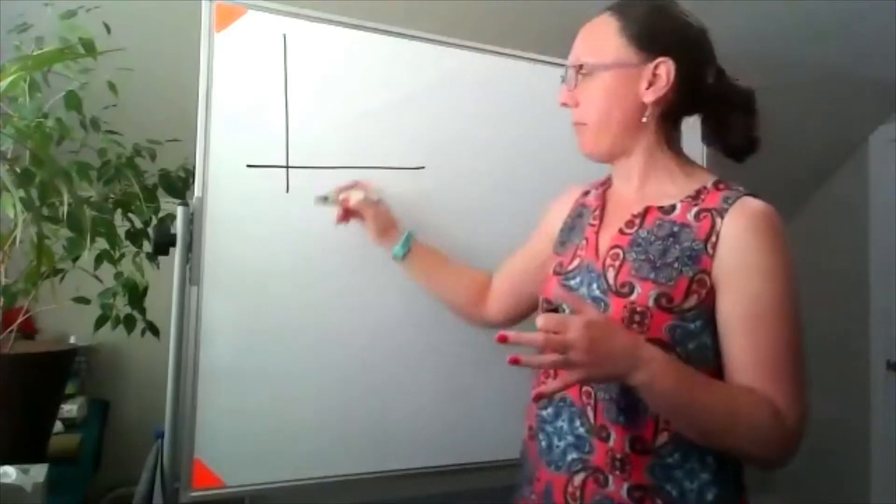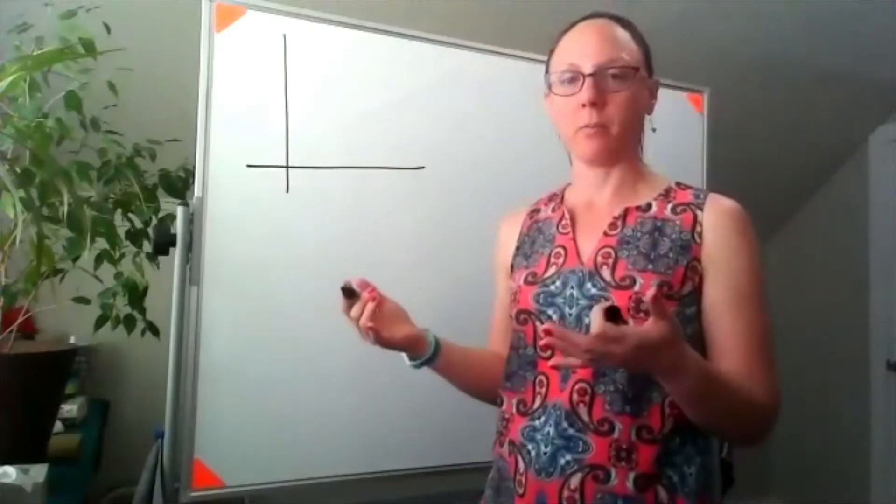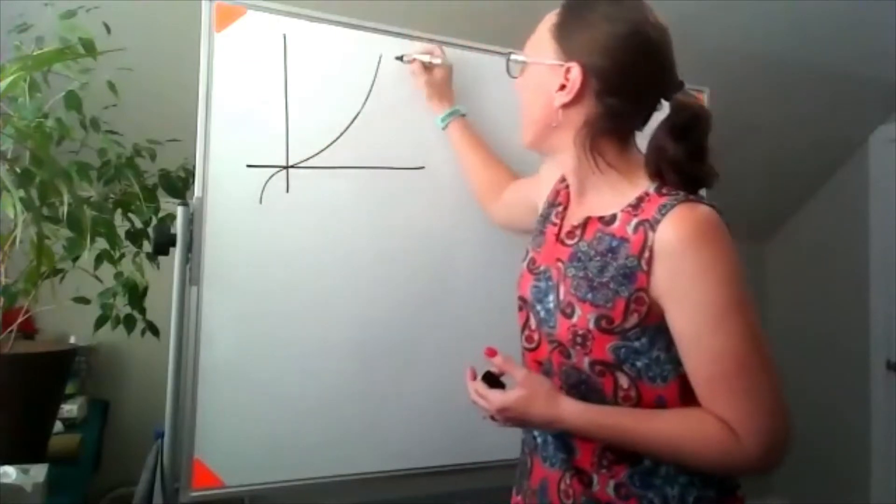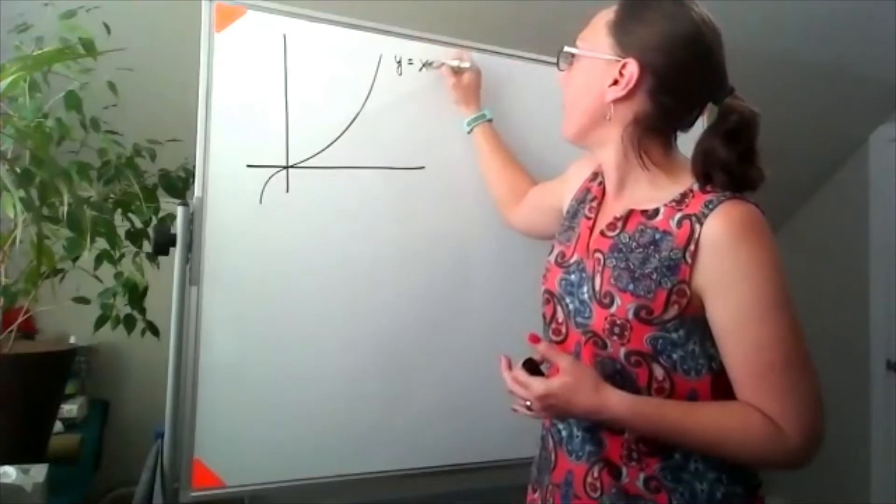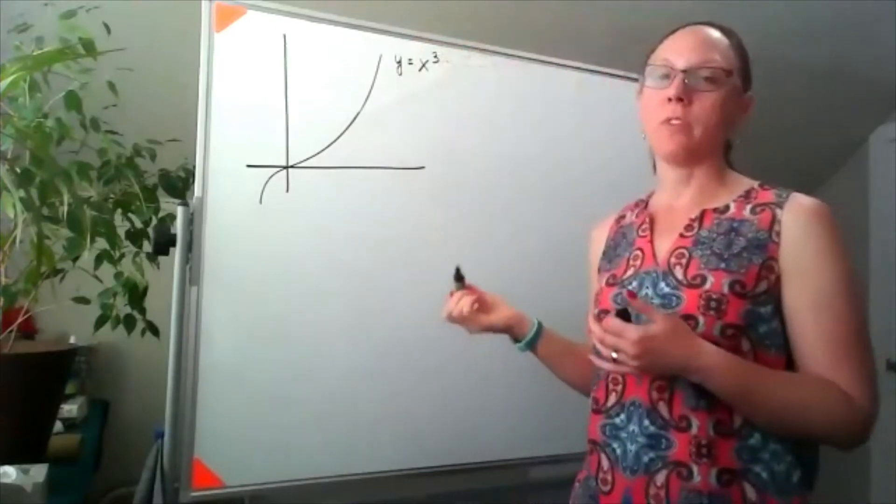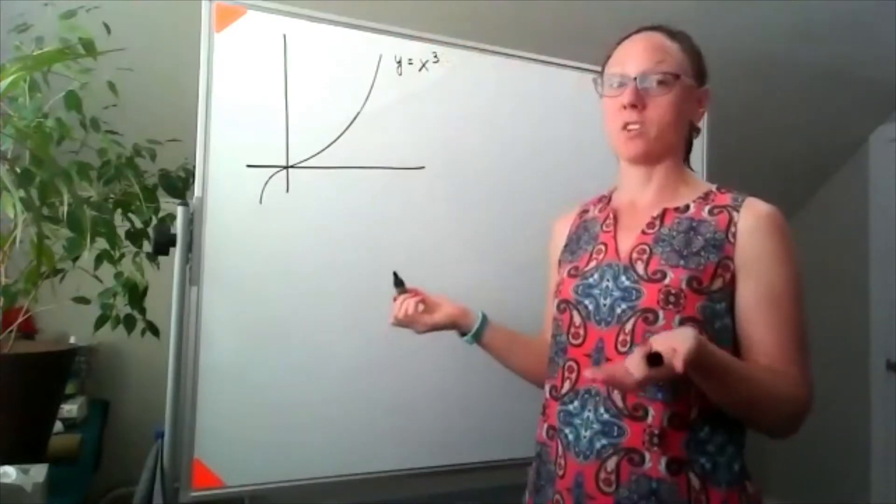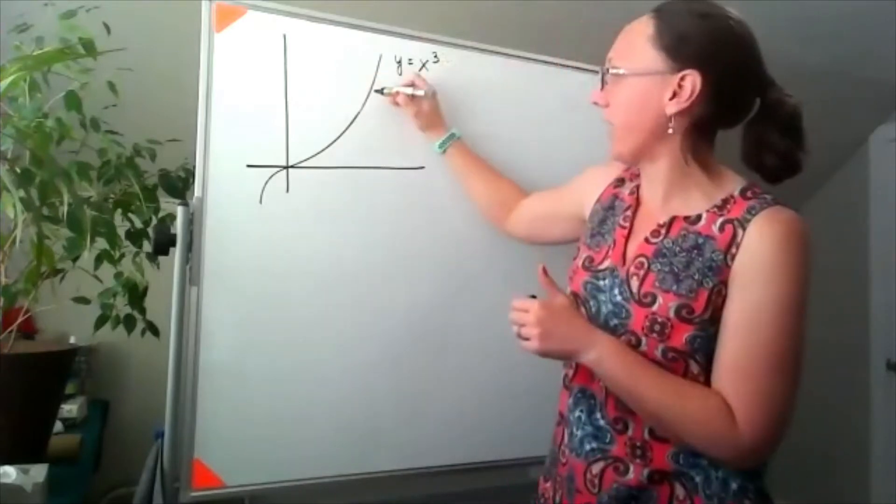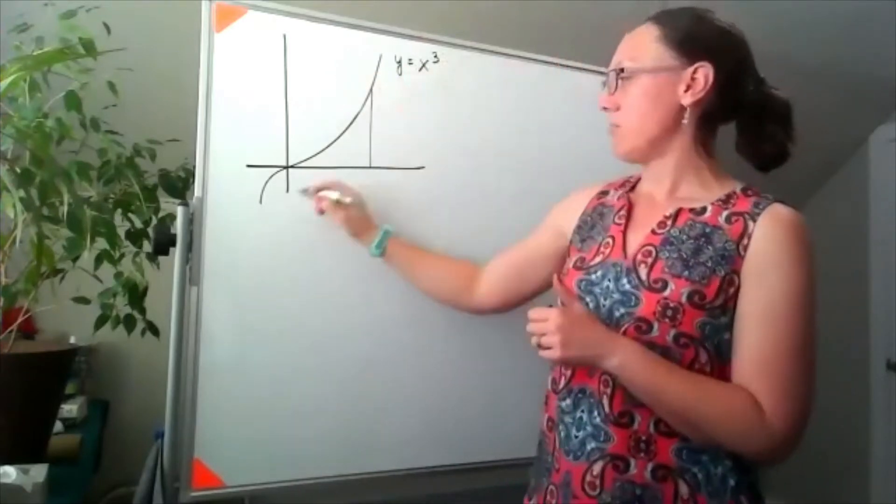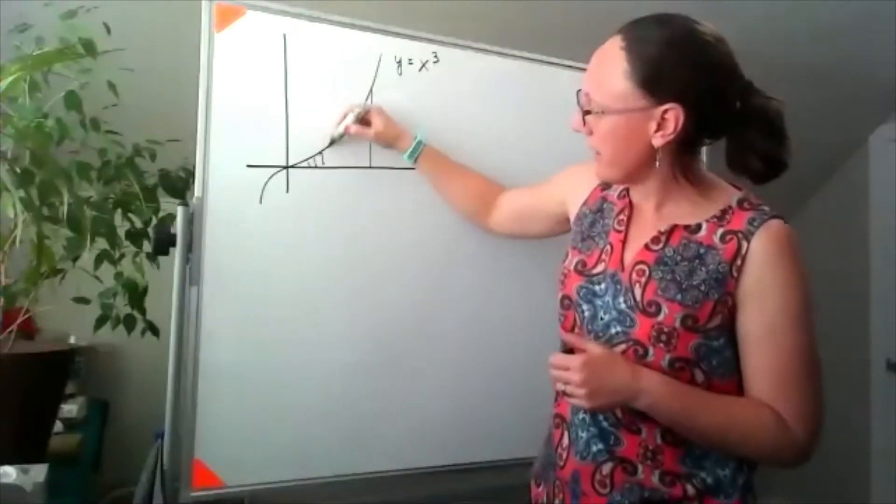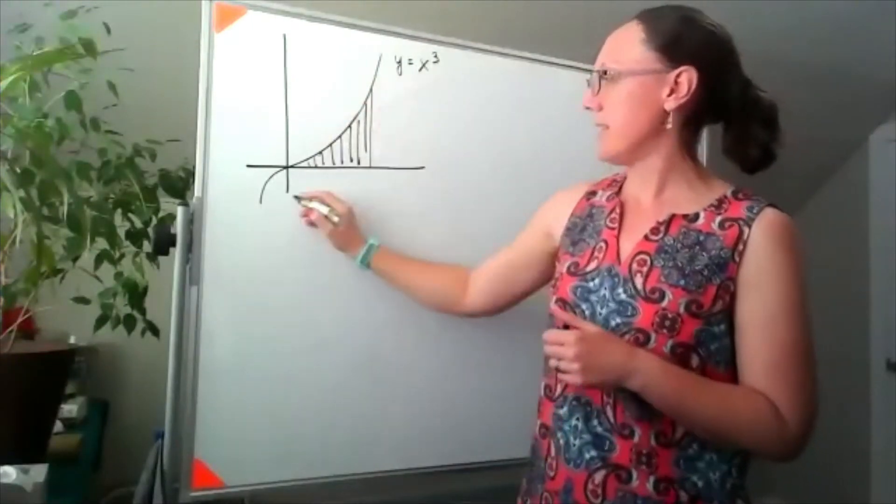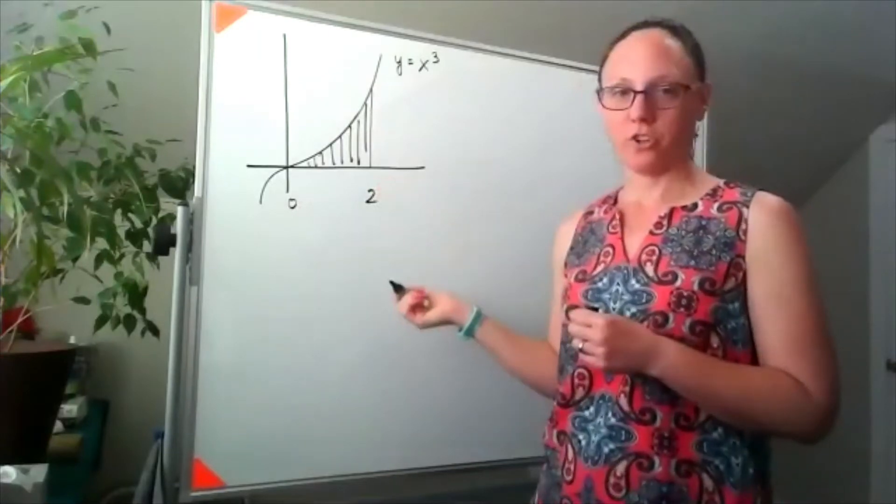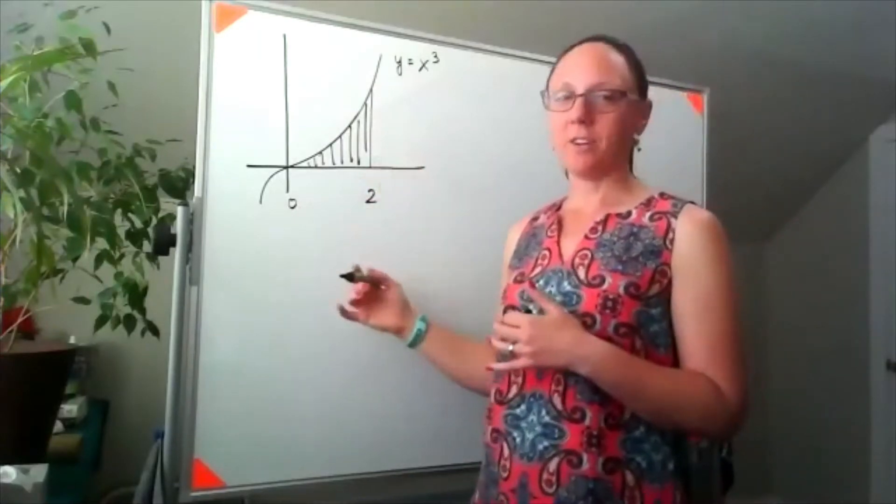I'm going to back us up to the fundamental theorem of calculus. I told you that this was the function y equals x cubed, and I wanted to find the area in here, say from 0 to 2. We could have done this by writing a Riemann sum, approximating the area with rectangles, going back to the beginning of chapter 5.